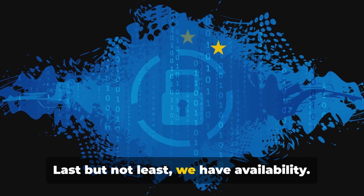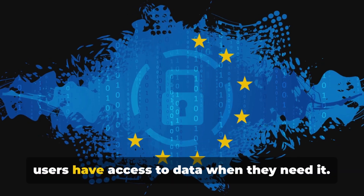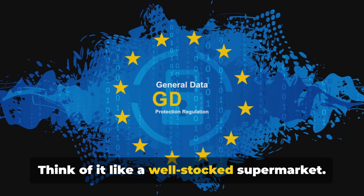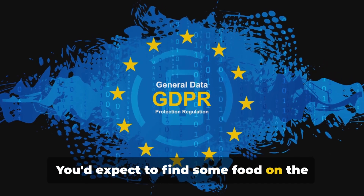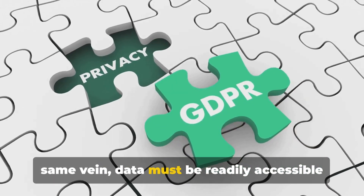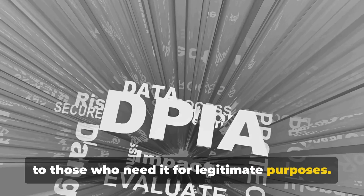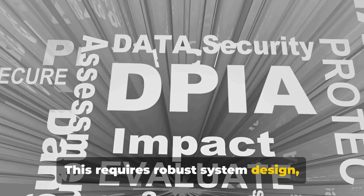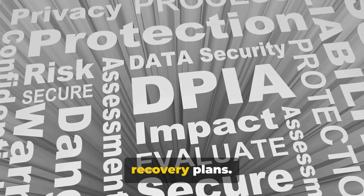Last but not least, we have availability. This principle ensures that authorised users have access to data when they need it. Think of it like a well-stocked supermarket — you'd expect to find food on the shelves whenever you visit. In the same vein, data must be readily accessible to those who need it for legitimate purposes. This requires robust system design, frequent backups and effective disaster recovery plans.